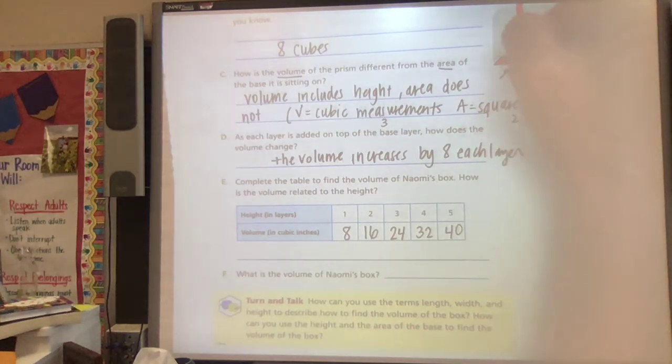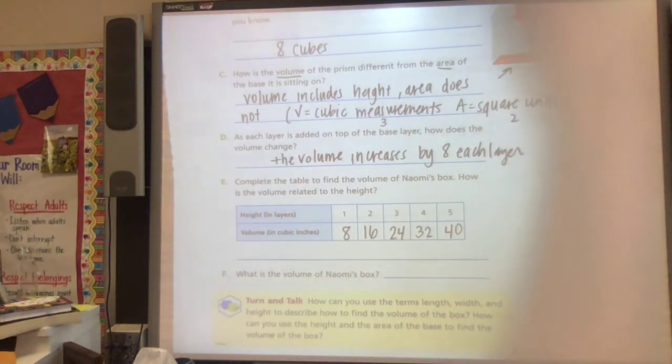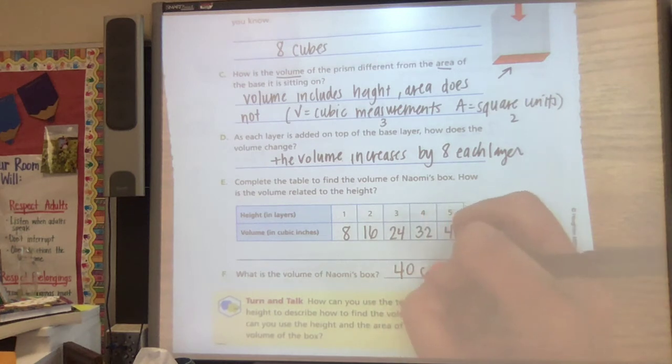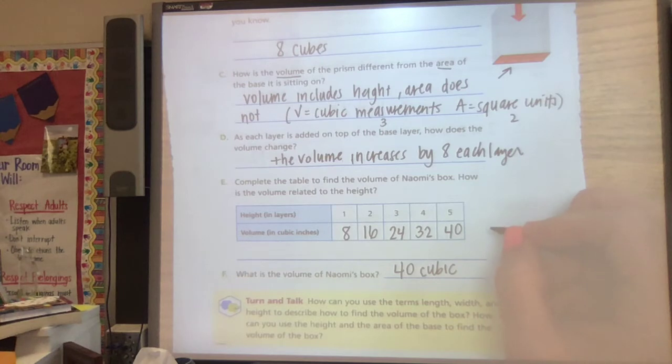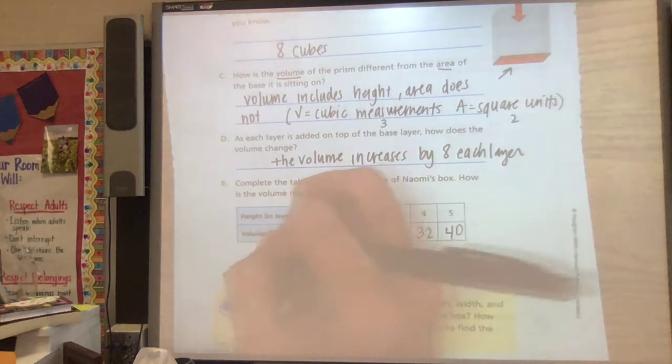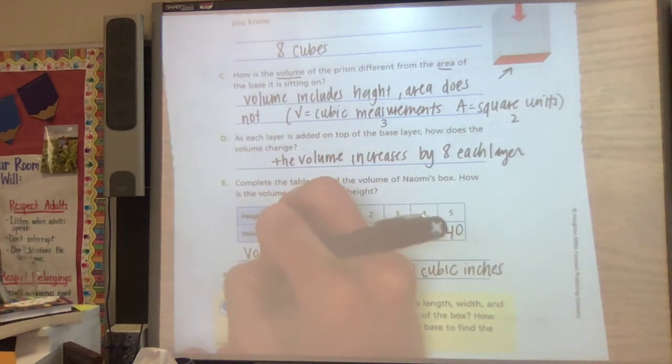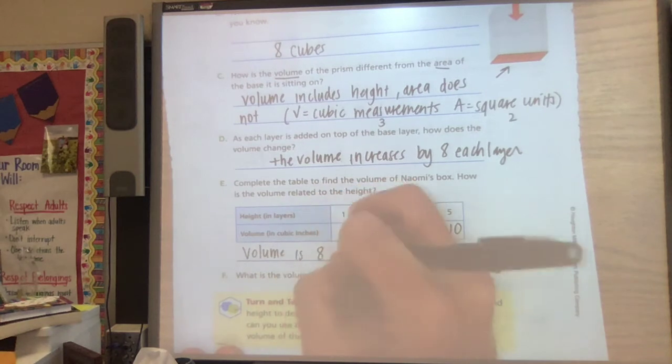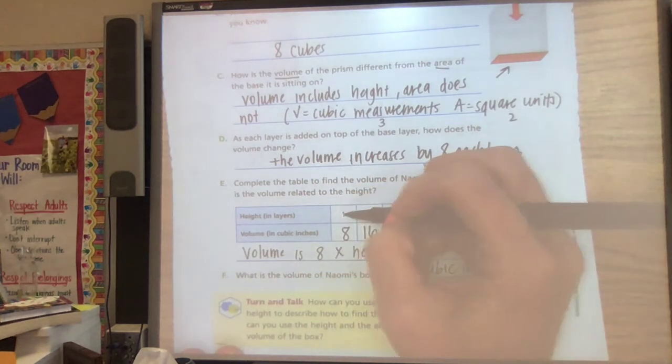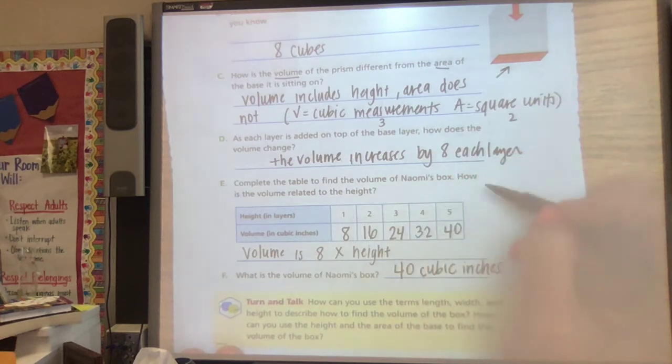So if she has one, two, three, one, two, three, four, five layers, then it's going to be 40 cubic inches. And what is the relationship here? Volume is eight times the height. One times eight, two times eight, three times eight, four, five.